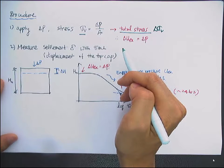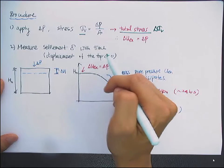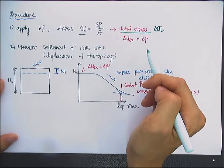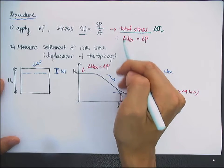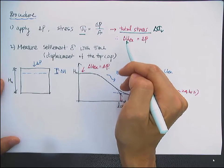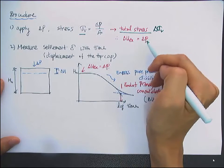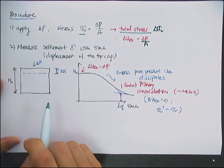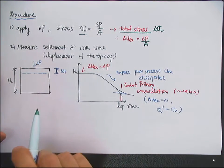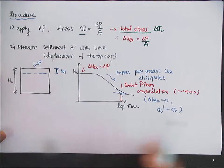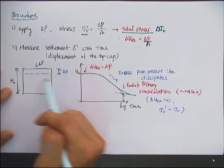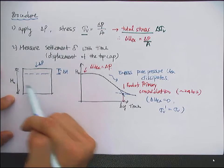Because the clay is fully saturated, this total stress increase will transfer to a water pressure increase, which is called the excess pore pressure. So then you have an initial excess pore pressure increase by delta P over A, which is the same amount as the total stress increase. Then you measure the settlement delta with time — that can be done by measuring the displacement.